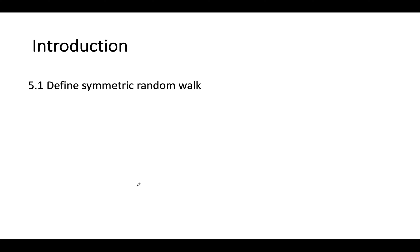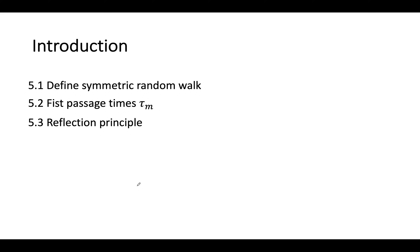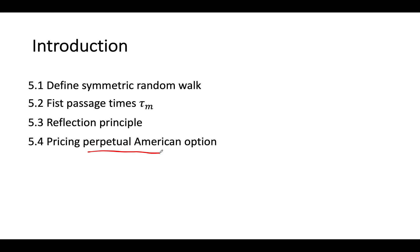In this chapter we're going to cover a few things. First we'll start by defining what we call the symmetric random walk. Then we'll go and study the first passage of time in section 5.2. After that we talk about the reflection principle in section 5.3, which is useful when pricing exotic derivative securities. Finally in section 5.4 we'll use everything we learned to price a perpetual American option — an American option that never expires, which is kind of exotic and interesting.